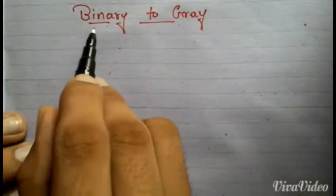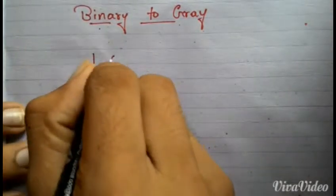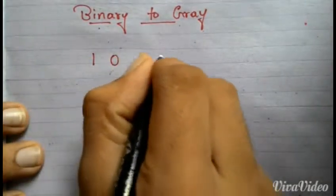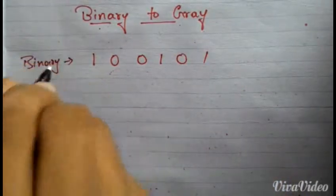Hello, today I'm going to show you how to convert a binary code into gray code. First, I'll take an example of a binary code: 10010101 in binary.